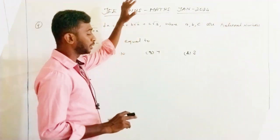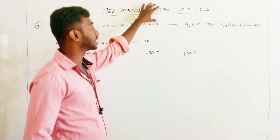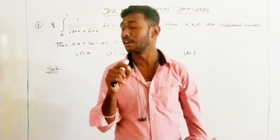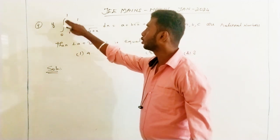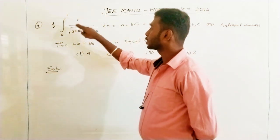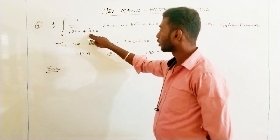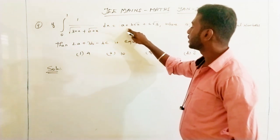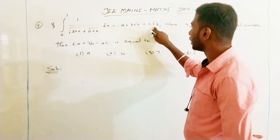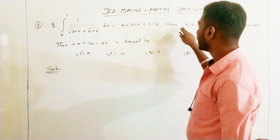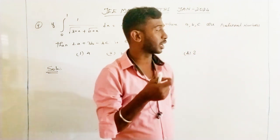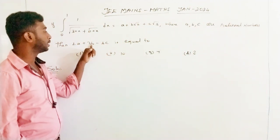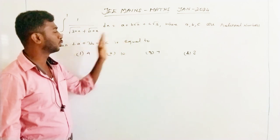Hi friends, today we are going to see JEE Mains max question, January 2024, question number 9. The integral over 0 to 1 of 1 divided by square root of (3+x) plus square root of (1+x) dx is equal to a plus b root 2 plus c root 3, where a, b, c are rational numbers. We are going to find the value of 2a plus 3b minus 4c.